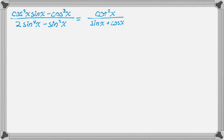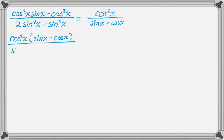Looking at the left-hand side, I can immediately factor the numerator and the denominator by greatest common factor. I'm going to take cosine squared out on top, leaving sine minus cosine. In the denominator, I can take sine squared out of both terms, leaving 2 sine squared minus 1. And since I just did the last problem, I have a lot of ideas of how to deal with 2 sine squared minus 1.